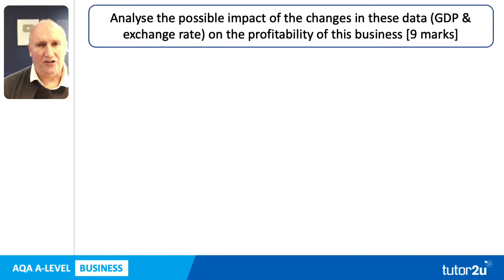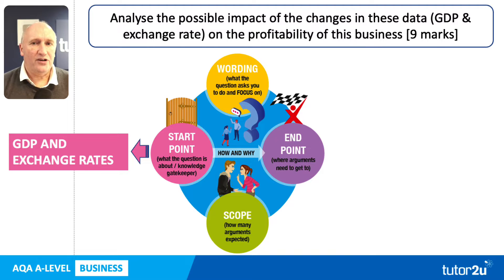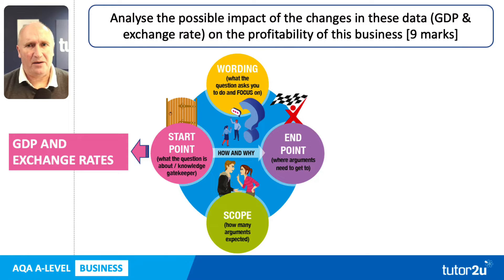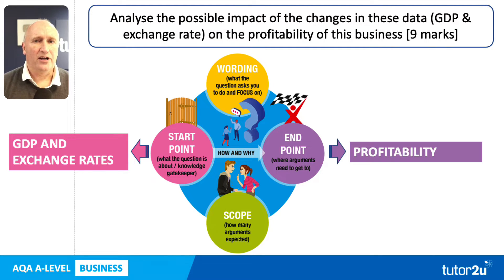Let's take a look at that question and make sure we know what the examiner is looking for. This question is clearly about two parts of the economic environment — economic data that we need to be able to interpret: GDP or economic growth, and exchange rates. An examiner favourite. Our arguments need to get to the potential impact of those changes on the profitability of the business.